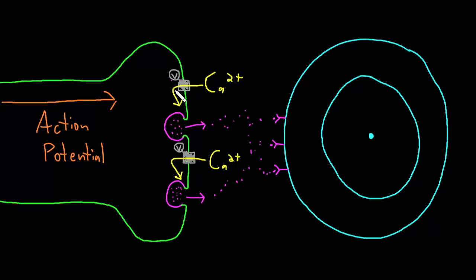When the train of action potentials stops firing, the voltage-gated calcium channels will close, calcium will stop flowing into the axon terminal, and the normal processes that push calcium out of the neuron will quickly lower the calcium concentration in the axon terminal. Synaptic vesicles will then stop fusing with the presynaptic membrane, and neurotransmitter will stop being released.